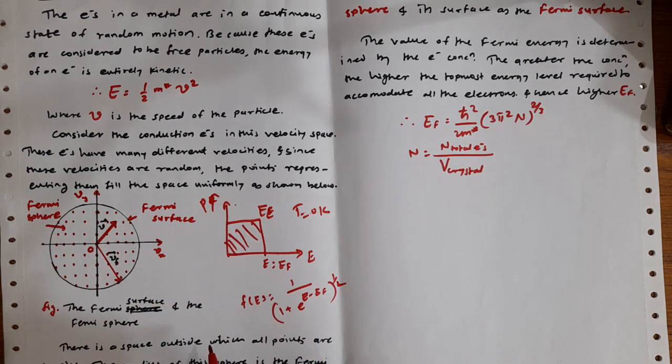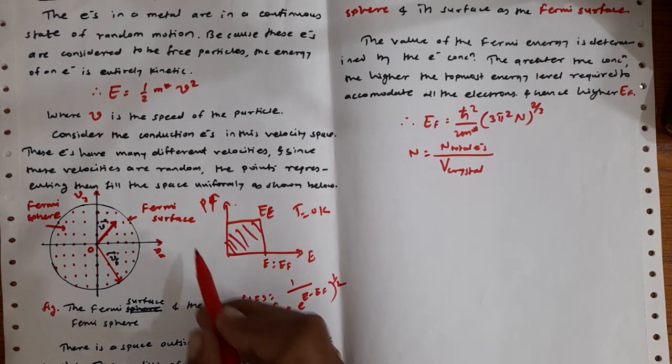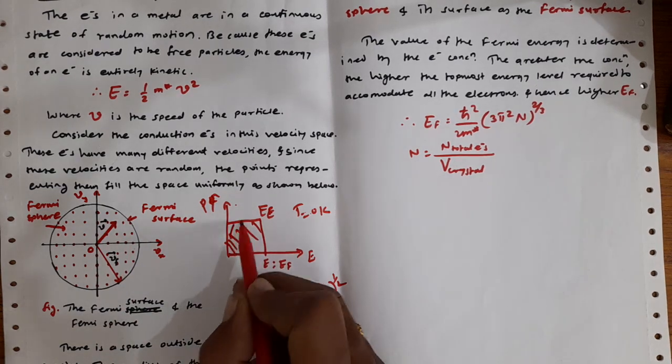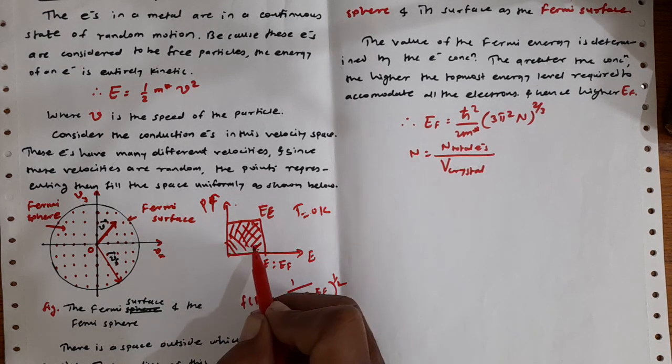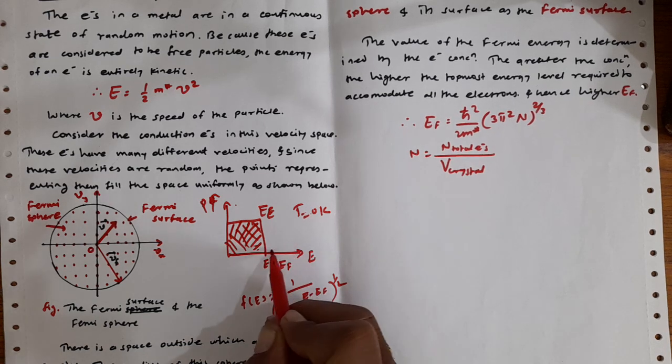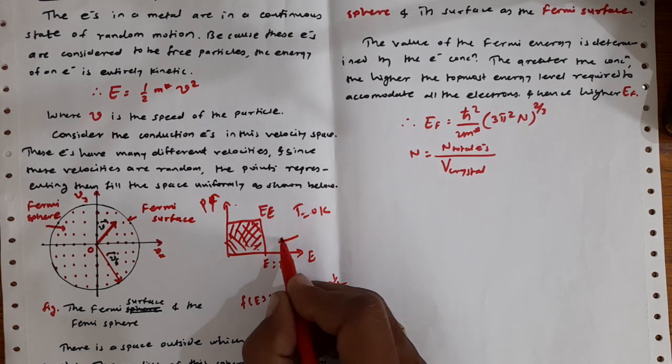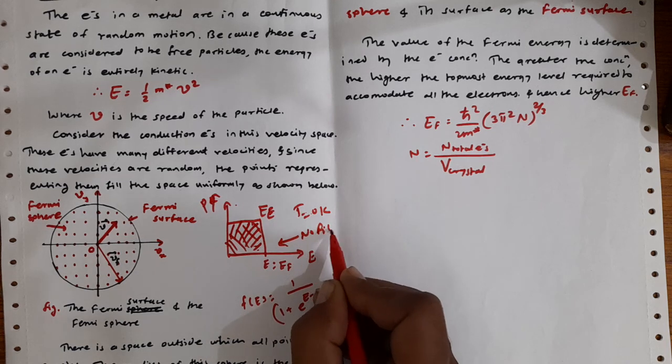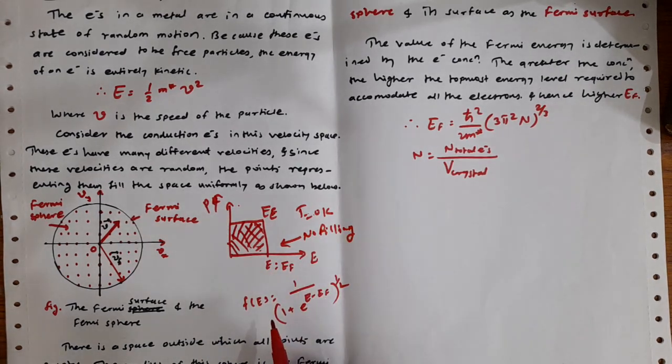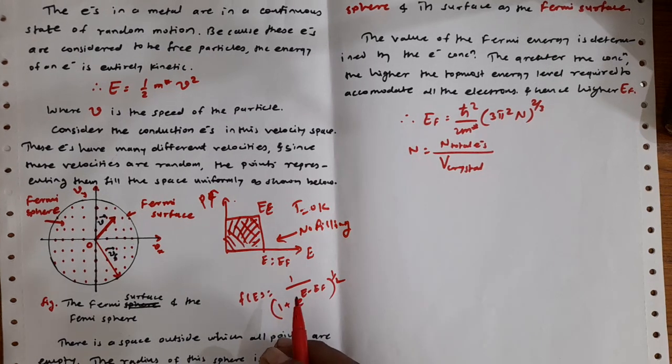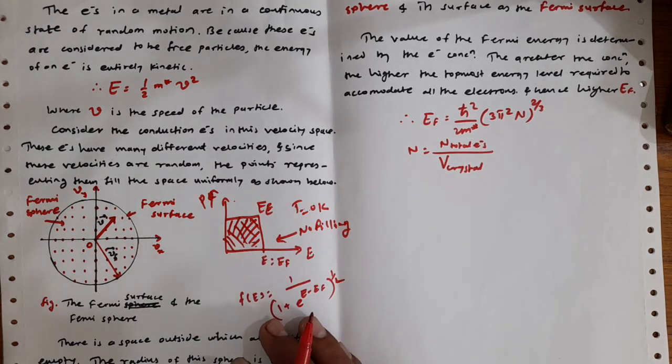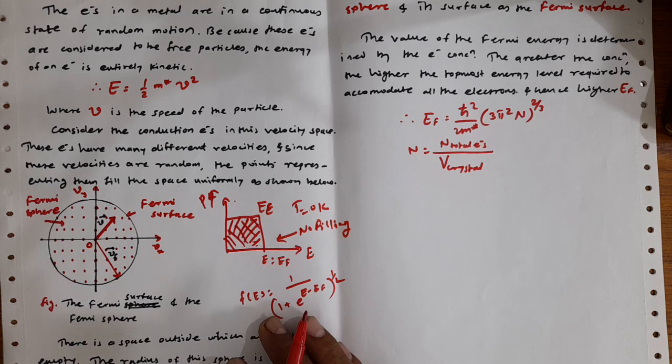So this is a velocity space we have considered here. These electrons have different velocities and they are random. There is a space outside which the states are completely filled. Outside this, above the EF, there is no filling at all. The states do not exist, electrons are not filled within these states. These states can be considered as empty.